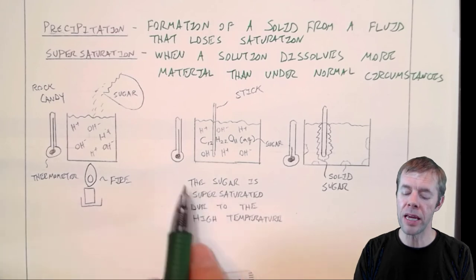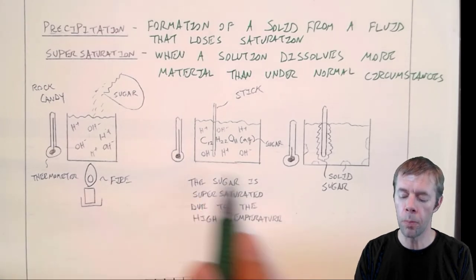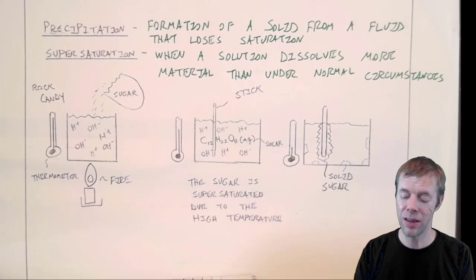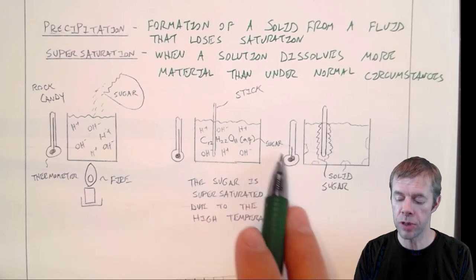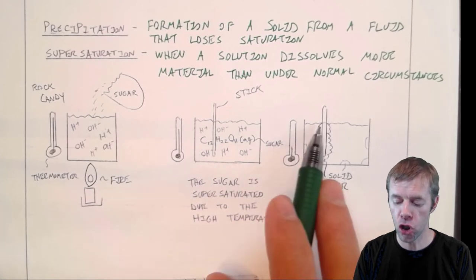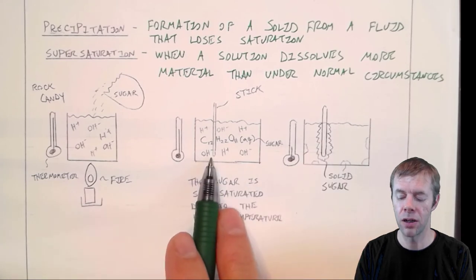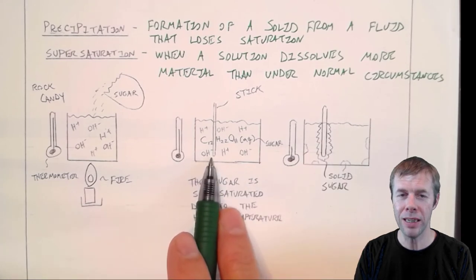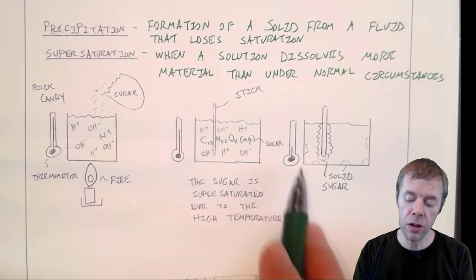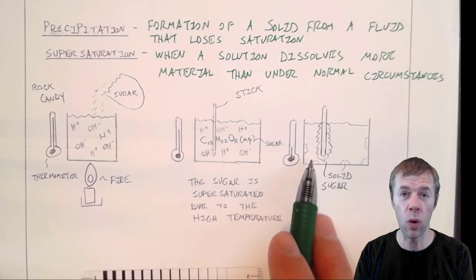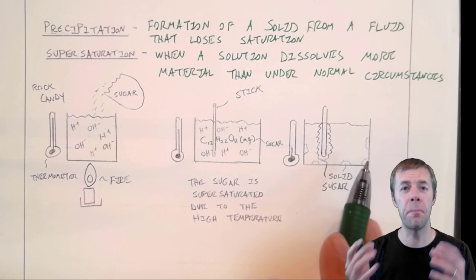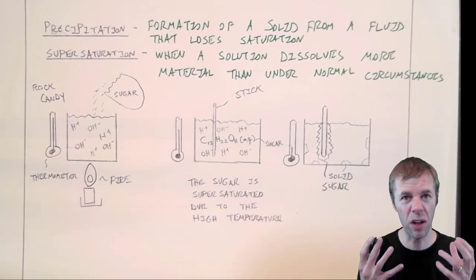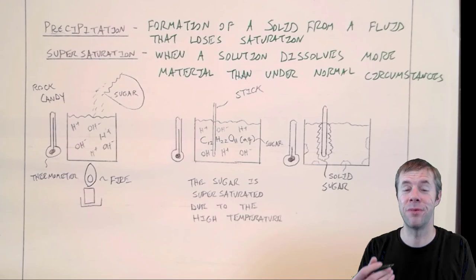And then as this temperature starts to drop it gets to a point where again this material wants to come out of solution. It wants to precipitate. Once it gets back to room temperature the sugar will actually precipitate on the stick that was put inside this sugar water. And sugar may start to form around the outside and if you let it sit there long enough and you've added enough sugar to it the whole cup will be like a big sugar crystal. Pretty awesome, right? That is precipitation.